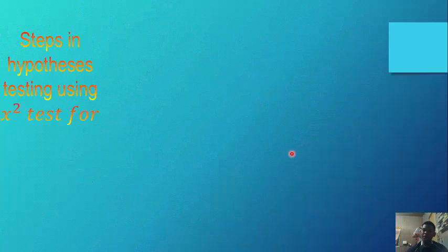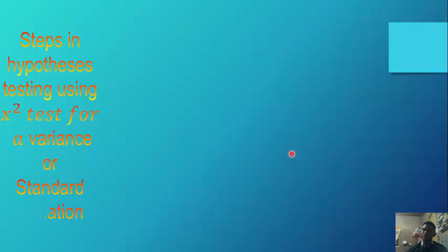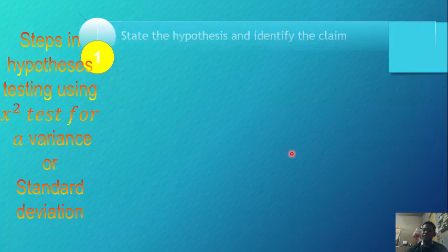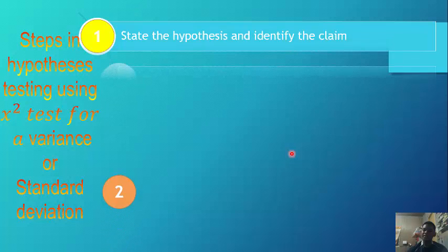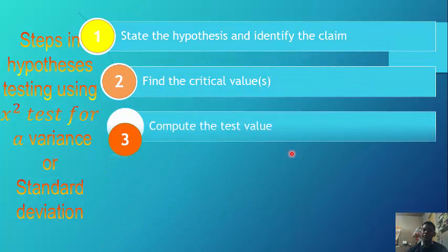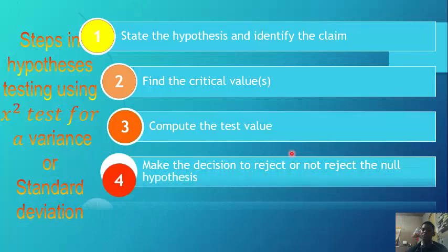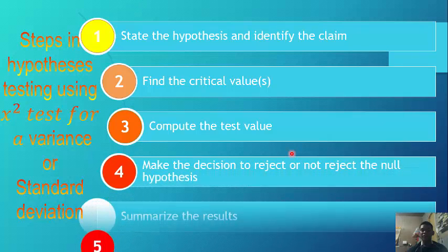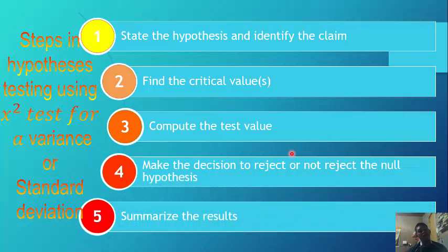We now have the steps in hypothesis testing using the chi-square test for a variance or standard deviation. Step 1: state the hypothesis and identify the claim. Step 2: find the critical values. Step 3: compute the test value. Step 4: make the decision to reject or not reject the null hypothesis. Step 5: summarize the result.